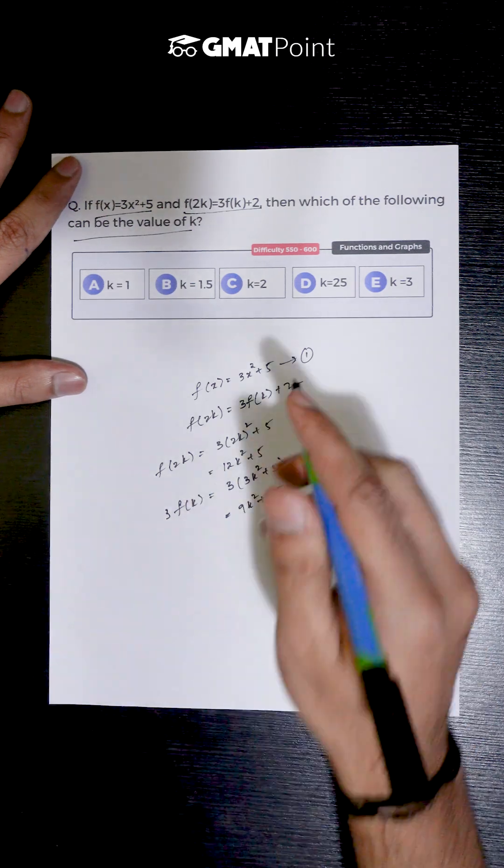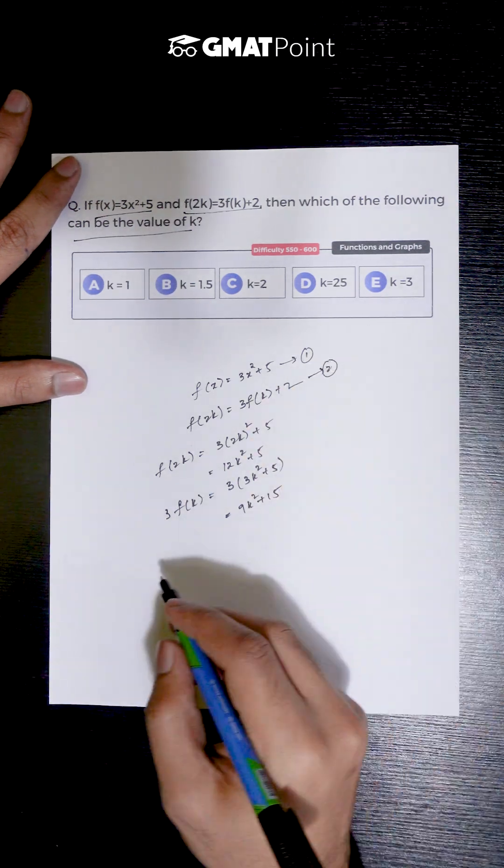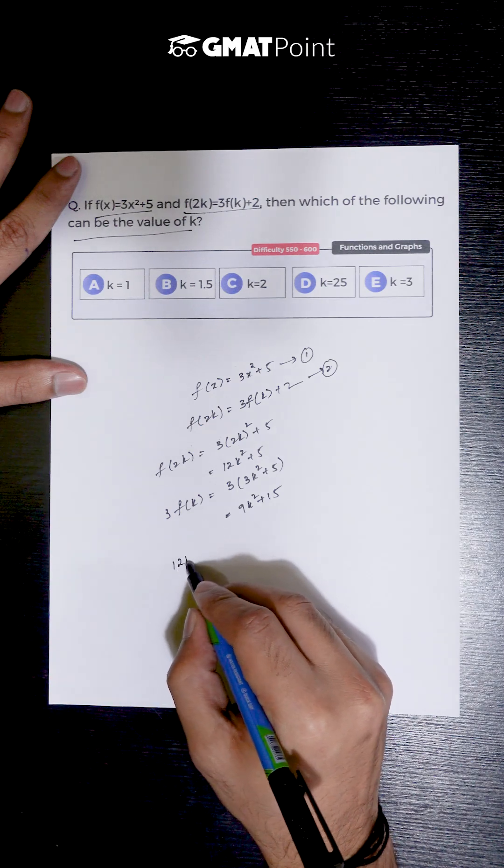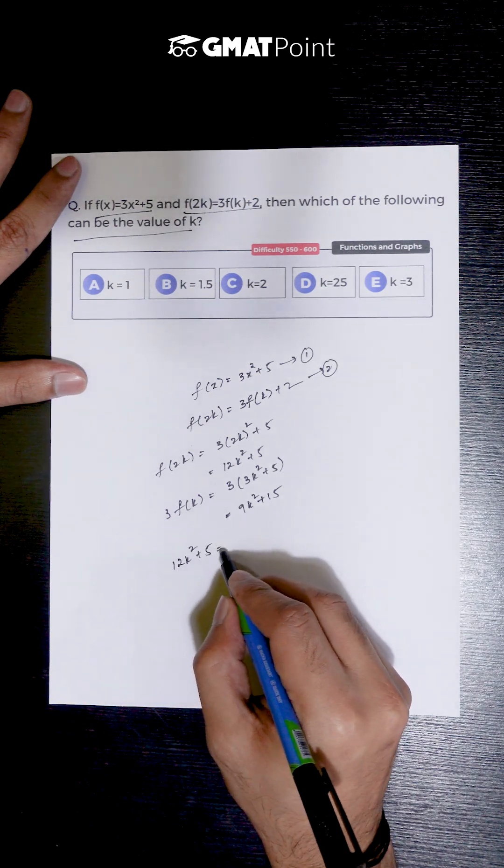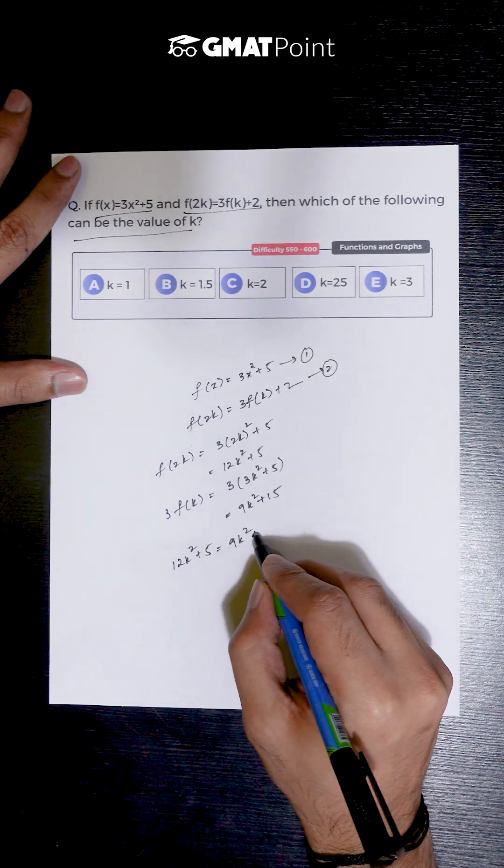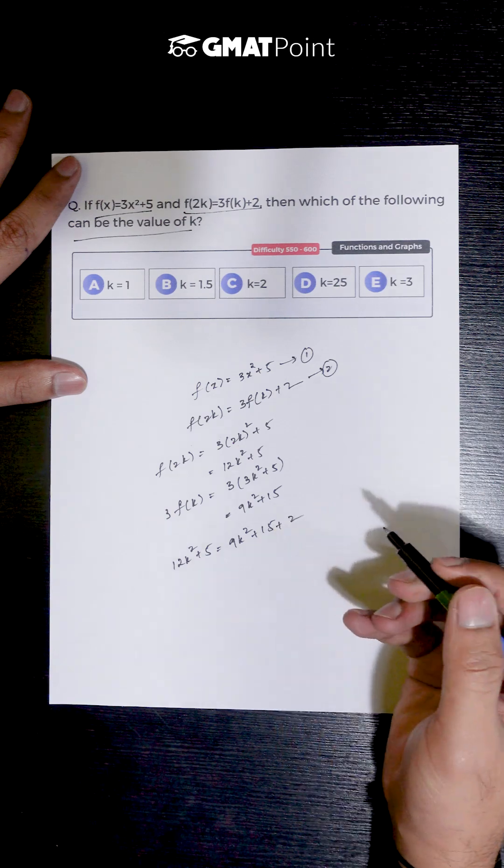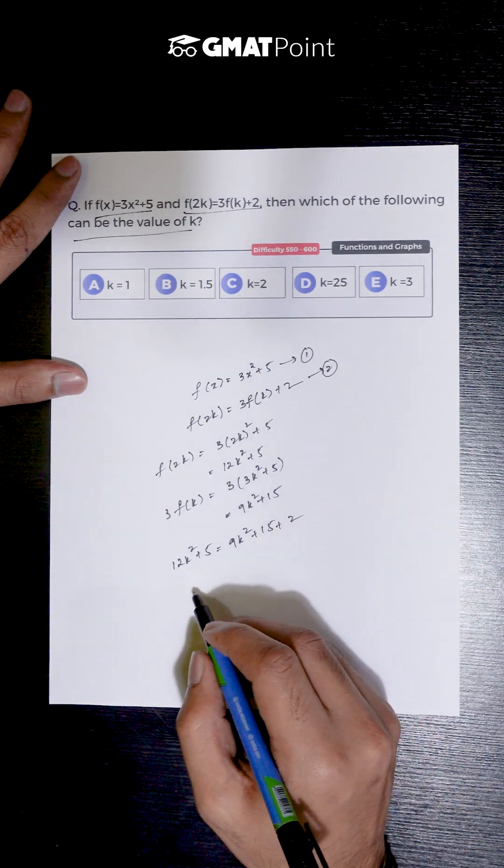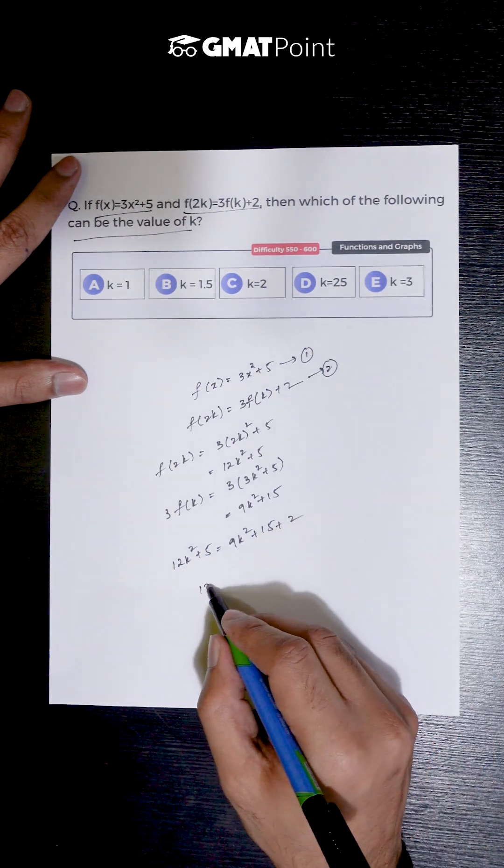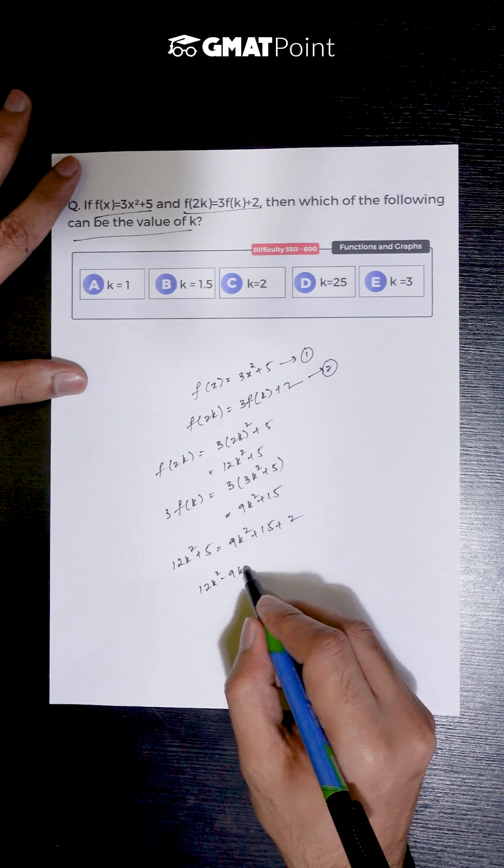Now substituting these values in equation 2 we get 12k² + 5 = 9k² + 15 + 2. Taking 9k² to LHS and 5 to RHS we get 12k² - 9k² = 15 + 2 - 5.